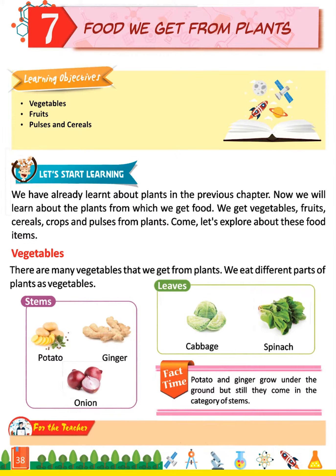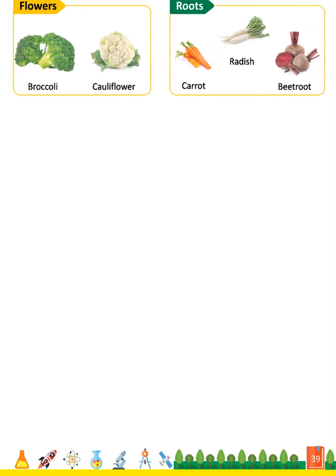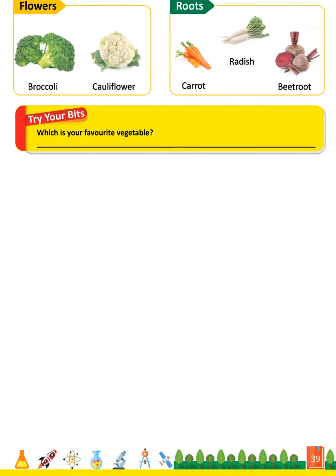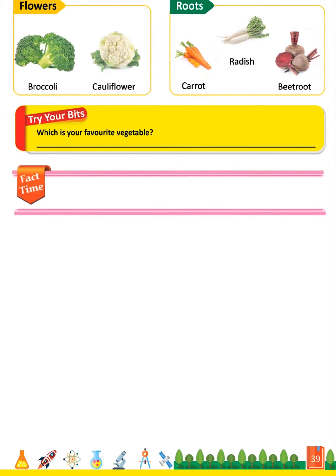For the teacher: Discuss with the children about the usefulness of plants. Also tell them about other uses of plants apart from food. Flowers: Broccoli, Cauliflower. Roots: Carrot, Radish, Beetroot. Try your bits: Which is your favourite vegetable? Fact time: Carrot is very good for the vision of our eyes.